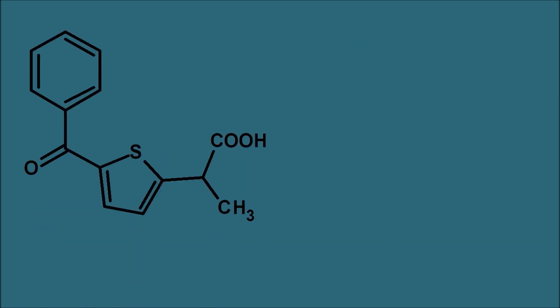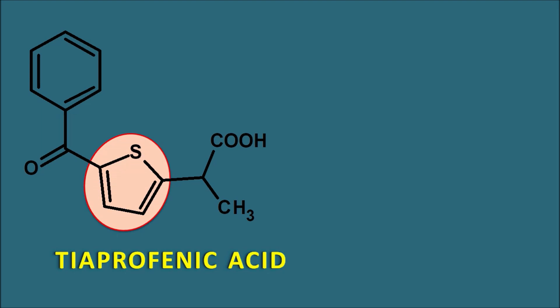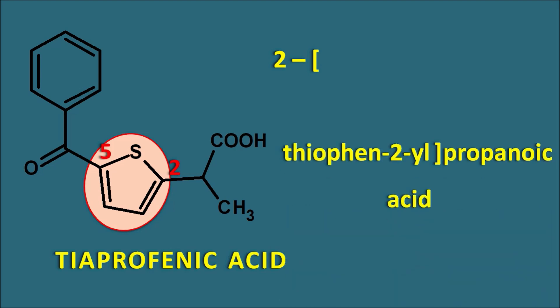Next is a different aryl propanoic acid derivative — this is a thiophene propanoic acid. Even though the ring is different, we can easily write the name. Here again propanoic acid is the main chain, attached with a heterocyclic ring system — thiophene. We start the numbering from sulfur, giving the second position to this carbon and fifth position to another. The thiophene is attached by its second position to the second position of propanoic acid — so thiophene-2-yl propanoic acid. At the fifth position there is a benzoyl side chain, giving 5-benzoyl thiophene-2-yl propanoic acid.